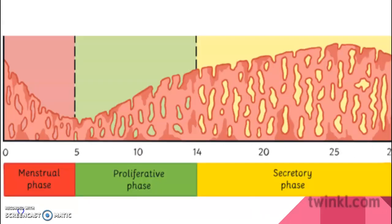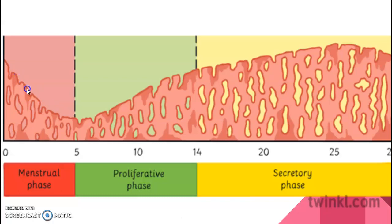Looking at the uterine cycle: during the menstrual phase there is bleeding and the endometrial wall gradually decreases as the stratum functionalis is shed. After the 5th day, from the 6th day till the 14th day, there is division of endometrial cells and the endometrium increases in size 5 to 6 fold. This phase is called the proliferatory phase or pre-ovulatory phase, as active mitosis is taking place.